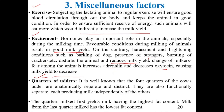Quarter order is the third miscellaneous factor. The four quarters of a cow's udder are anatomically separate, distinct, and functionally independent, each producing milk independently of the others. It has been reported that the quarter milked first yields milk with the highest fat content, whereas milk from the last quarter milked has the lowest fat content.